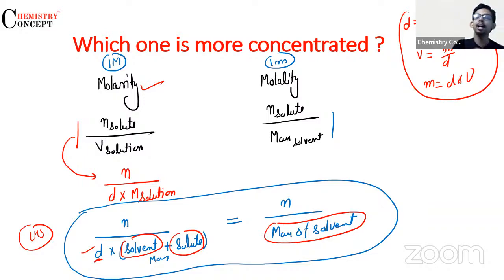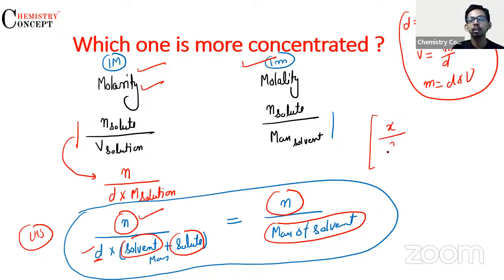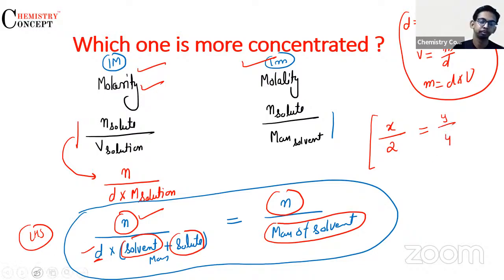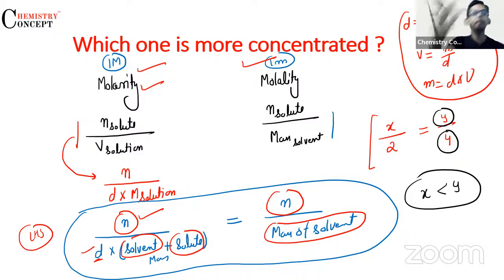Denominator bada hai, tab bhi dono ki value same aani chahiye — 1 equals 1. Yeh sirf tab possible hai jab iska numerator bhi bada ho. Matlab, agar main likhon ki X upon 2 equals Y upon 4, toh yeh sirf tab possible hai when Y is greater than X. Matlab jiska denominator bada hota hai uska numerator bhi bada hona padega.